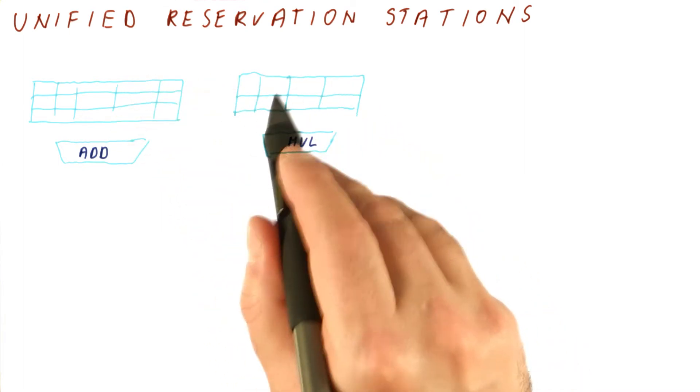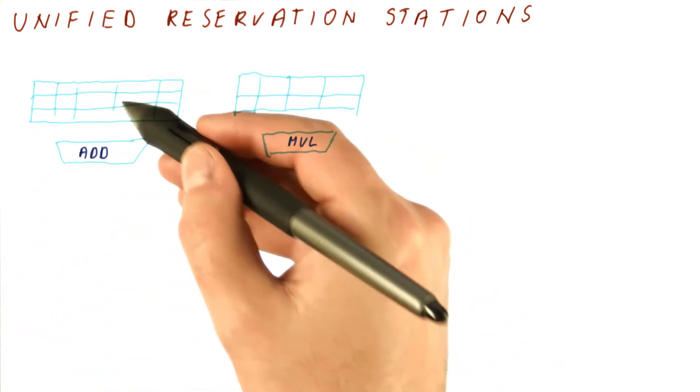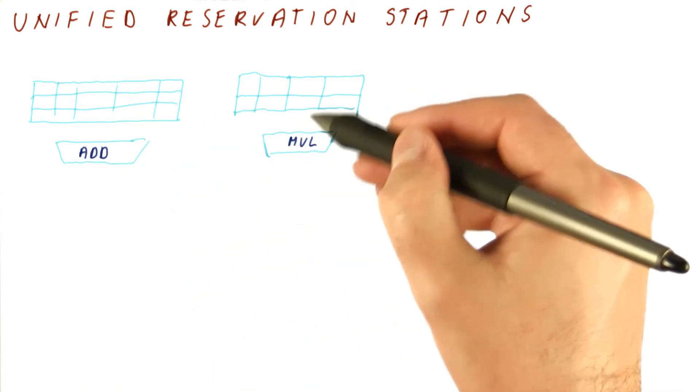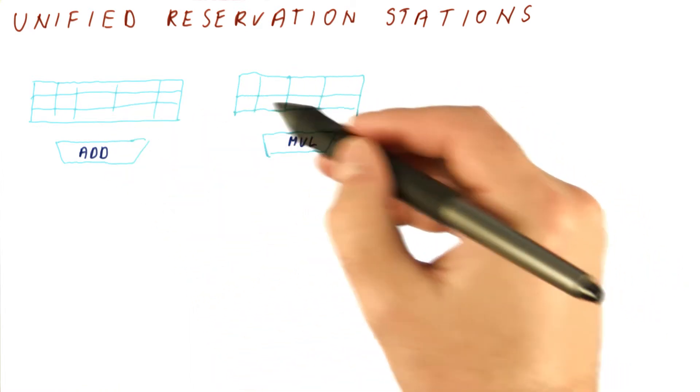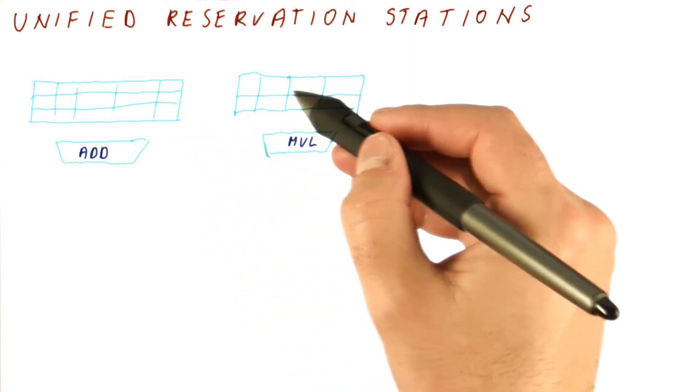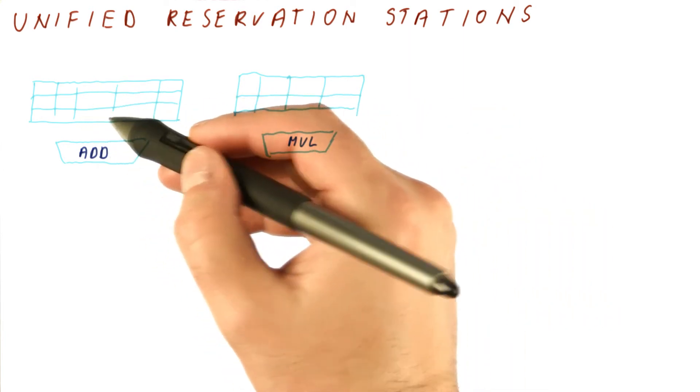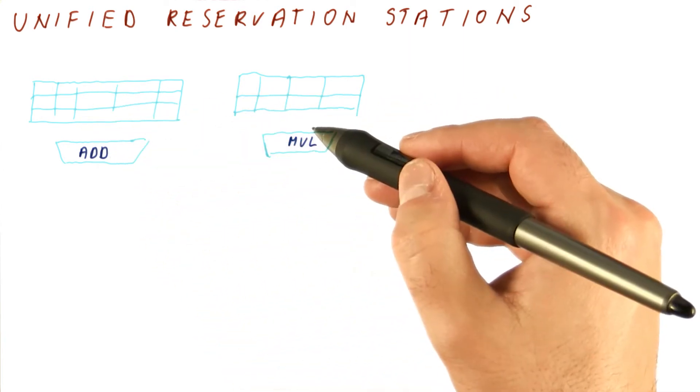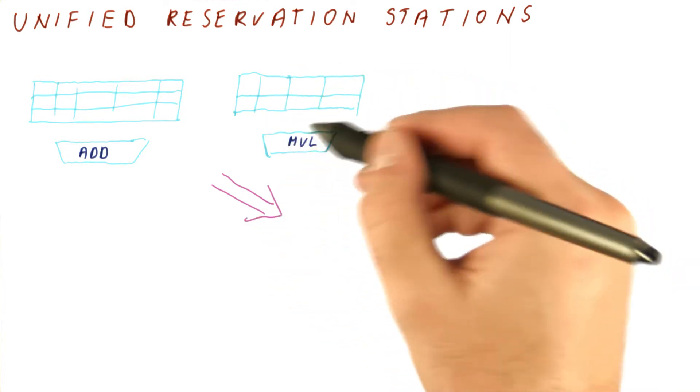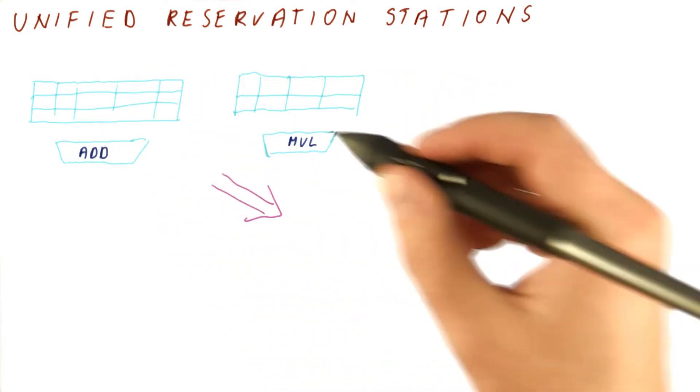Note that these reservation stations are exactly the same, except that this one is feeding this unit and this one is feeding this unit. But the logic in them is exactly the same. They're monitoring all of the results that are broadcast, capturing results, and then going to execution units. So to improve our ability to use the expensive reservation stations,